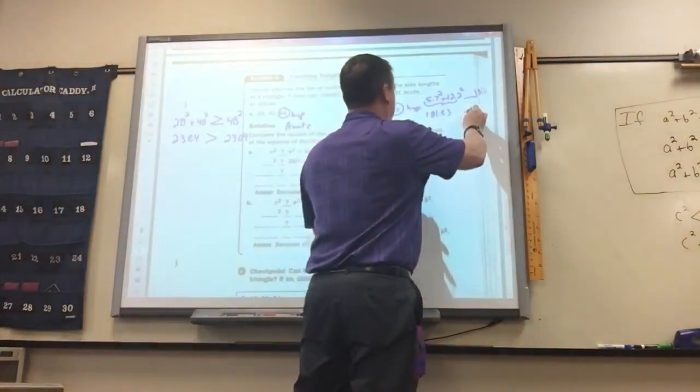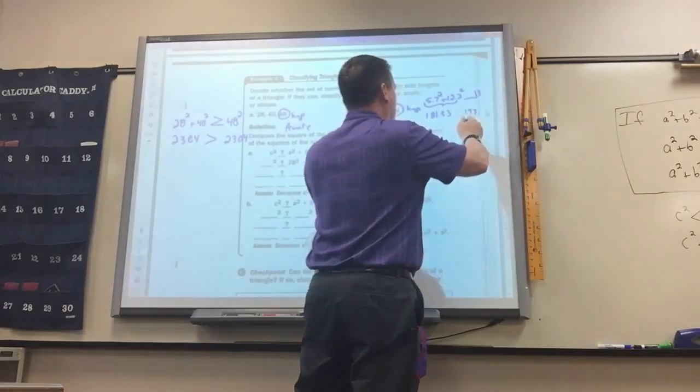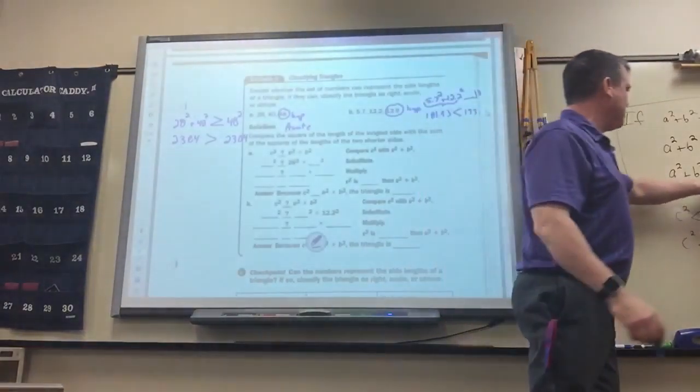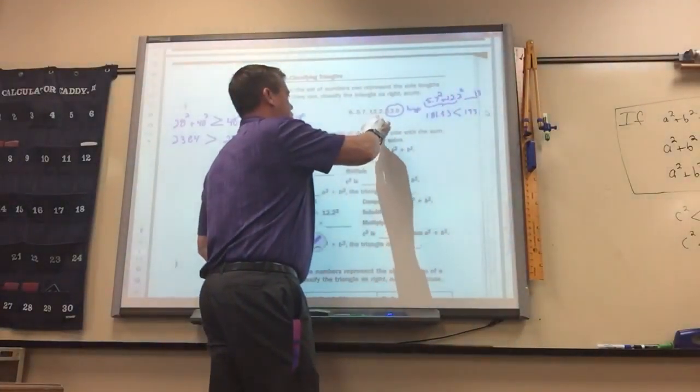This is 193.21. So that's less than. If a squared plus b squared is less than c squared, it is obtuse.